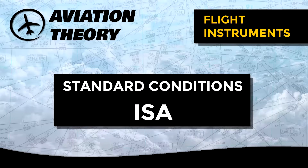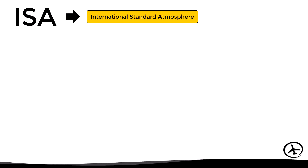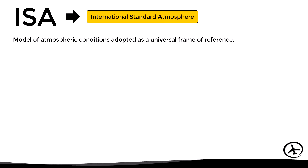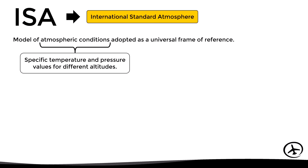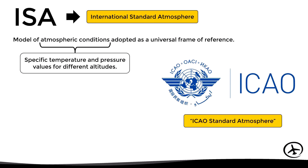Today we will talk about the ISA atmosphere, also known as standard conditions in aviation. First of all, let's see what ISA stands for. ISA is the acronym for International Standard Atmosphere. This is a model of atmospheric conditions adopted as a universal frame of reference. The atmospheric conditions described in this model refer mainly to air pressure and temperature values at different altitudes. This model was created by the International Civil Aviation Organization in the 1950s, and that's the reason why the acronym ISA is sometimes interpreted as ICAO Standard Atmosphere.